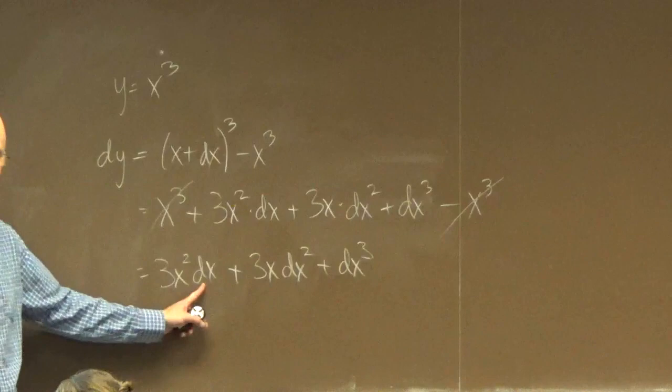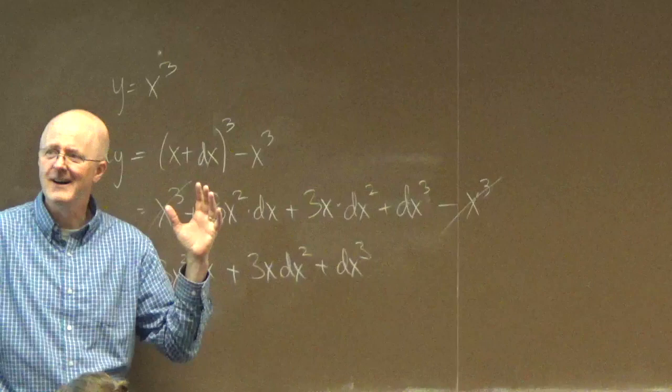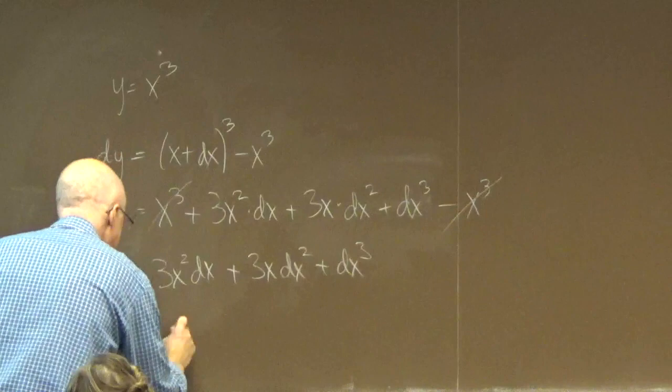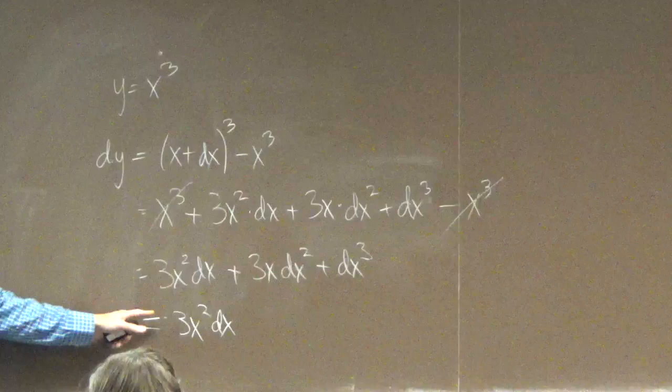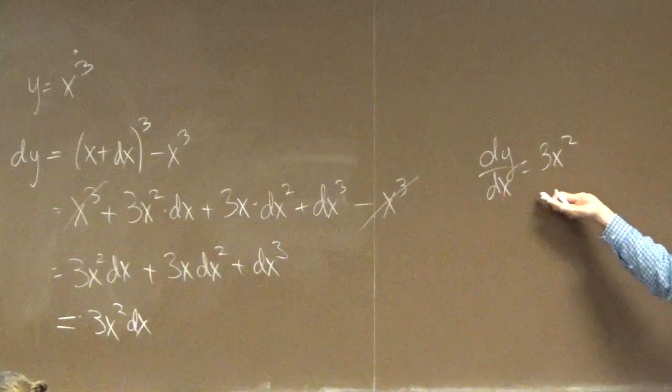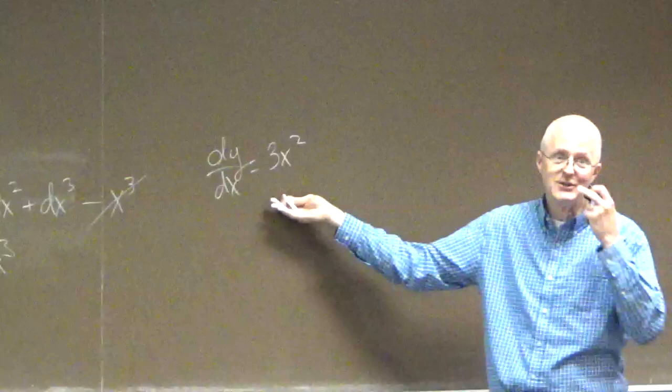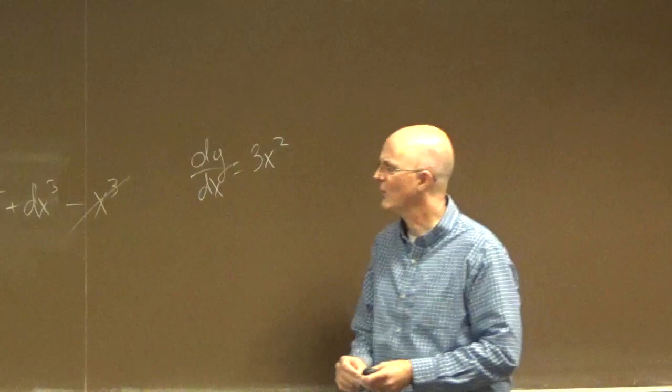Write 3x squared dx plus 3x dx squared plus dx cubed. Dx is infinitesimally small. Dx squared must be unspeakably small. Dx cubed must be super-duper unspeakably small. If I can ignore dx squared, I can certainly ignore dx cubed. Let's say this equals, in fact, 3x squared dx. I'm not even going to put an approximate equal here. I'm going to say equals. Hey, dy equals 3x squared dx. Divide both sides by dx. Dy/dx equals 3x squared. I already knew the answer would be that. It worked. And you can try it for x to the fourth and x to the fifth and x to the sixth. Does it work with other functions?